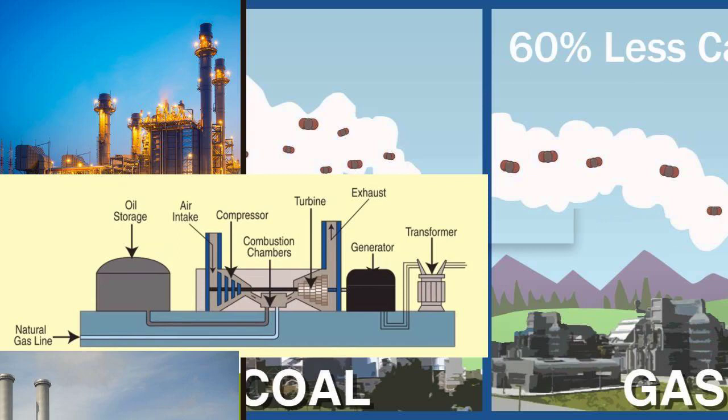A gas power plant, also known as a natural gas power plant or gas-fired power plant, is a facility that generates electricity by burning natural gas as its primary fuel source. These power plants play a significant role in the global energy landscape due to their efficiency, relatively lower emissions compared to coal-fired power plants, and flexibility in responding to fluctuations in electricity demand.